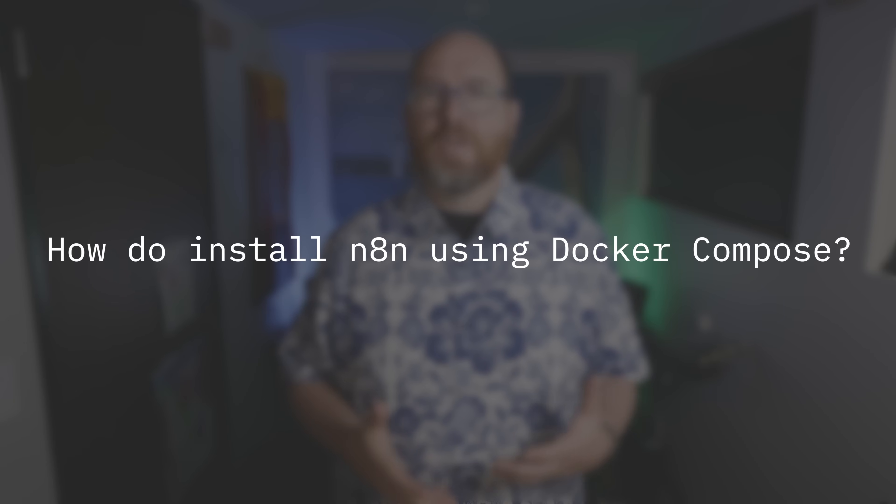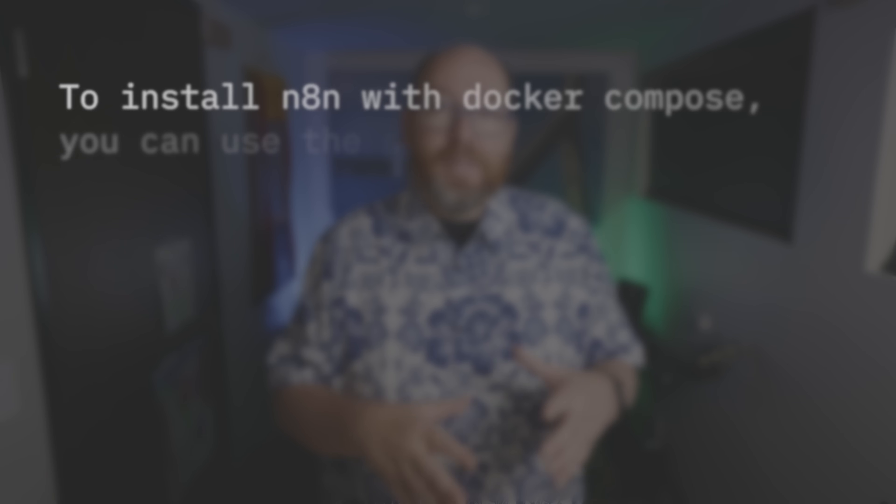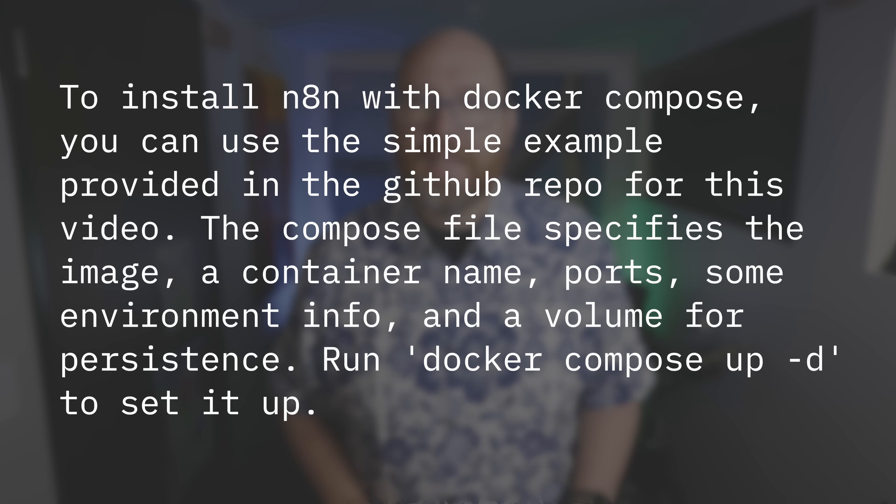I chunked up the scripts from my last few videos and then embedded them with five models without prefixes, and then repeated that with the three that support prefixes. Then I asked the question: how do I install N8N with Docker Compose? When using NOMIC embed text without prefixes, I didn't get an answer. But with prefixes in place, I got a much more complete answer. I'll go through all the models and a bunch more questions — stay on for that.